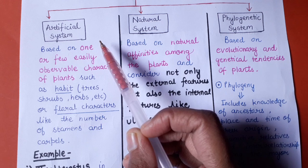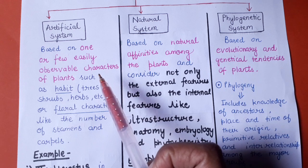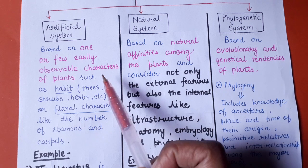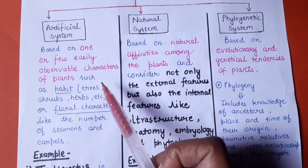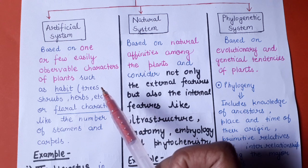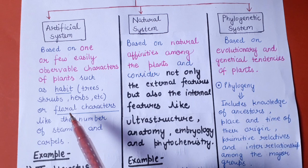First let's talk about the artificial system of classification. This is such a classification which is based on some easily observable characteristics which you can see and easily identify. This is the oldest classification. Plants can be classified based on their habits — they have herbs, shrubs, and trees.